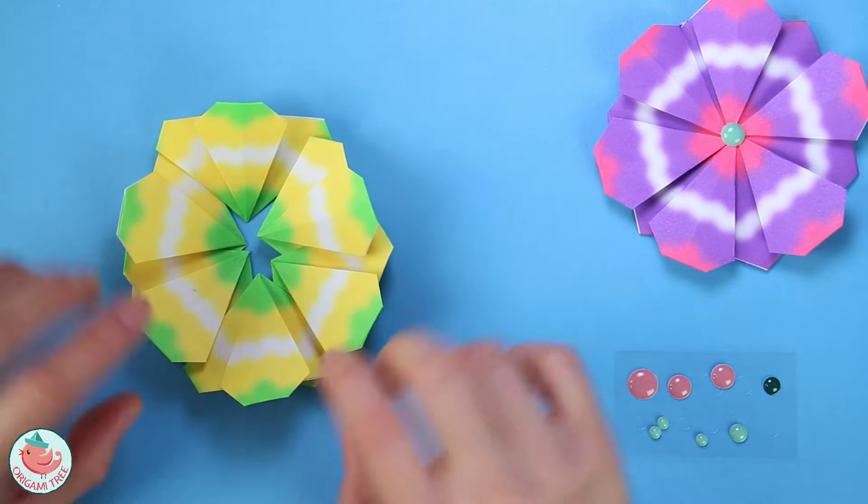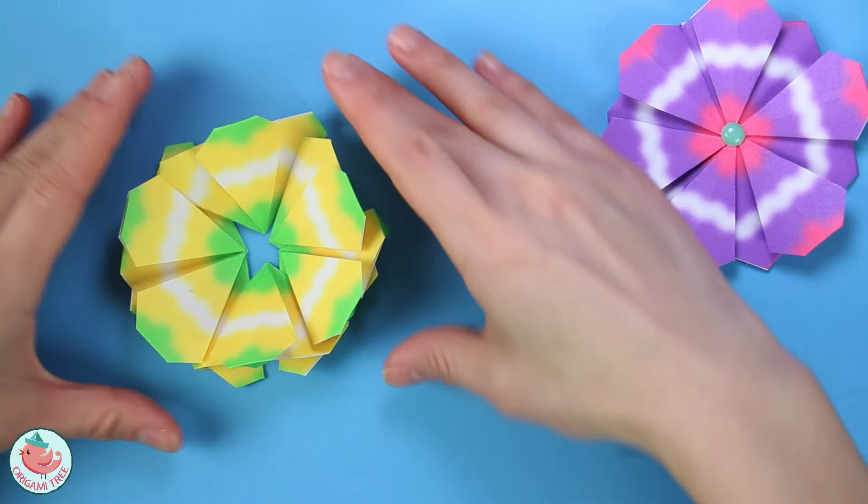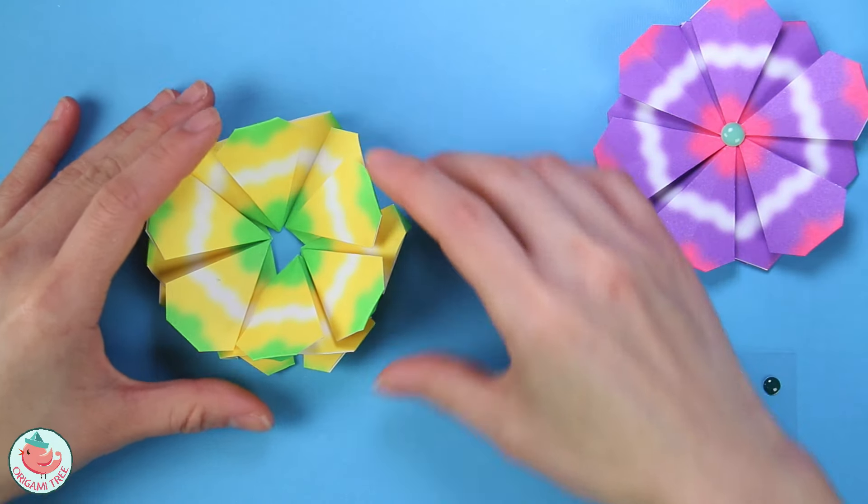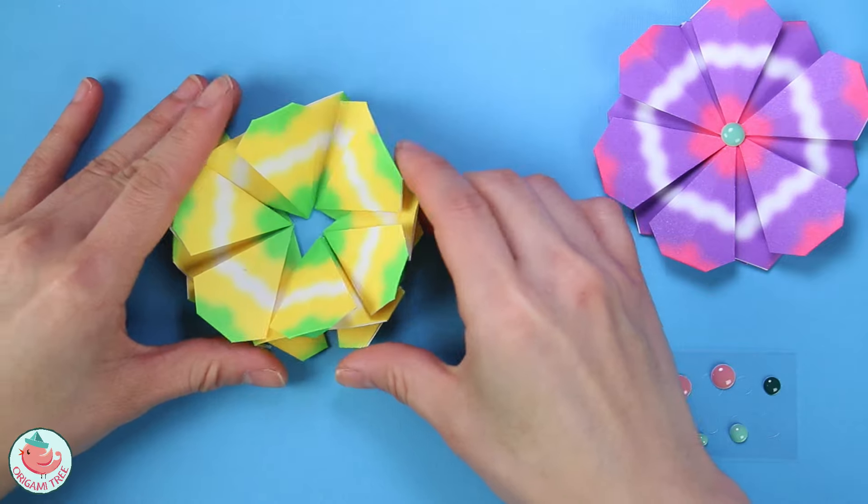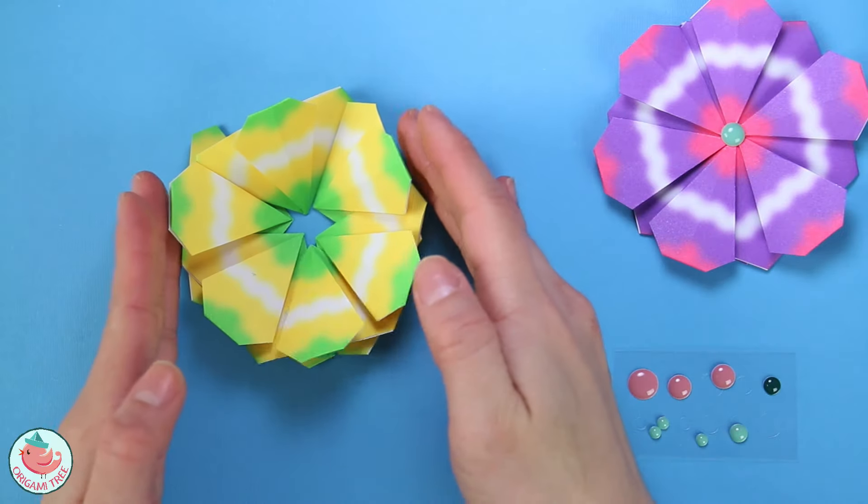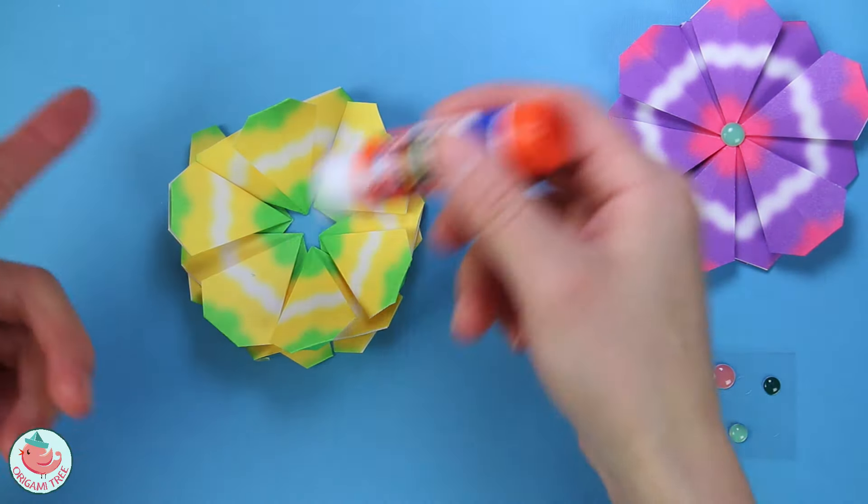Technically all you need is five petals, but I kind of like the six petal look a little bit more. So let's go like that to give yourself an idea of how the flower is going to look. And once you have the general shape, you're just going to take your glue and glue the petals together.